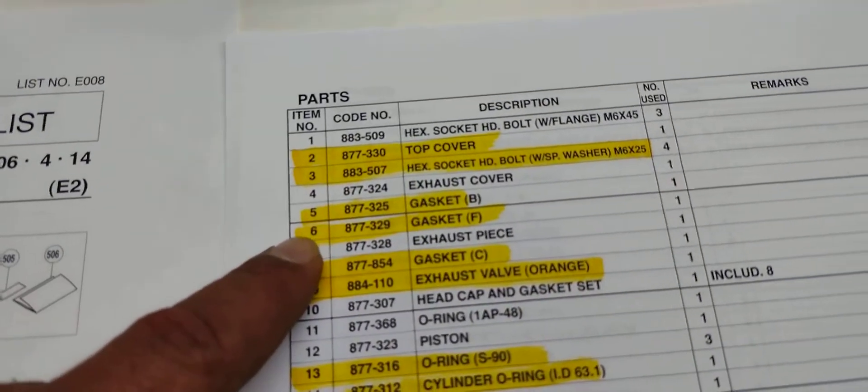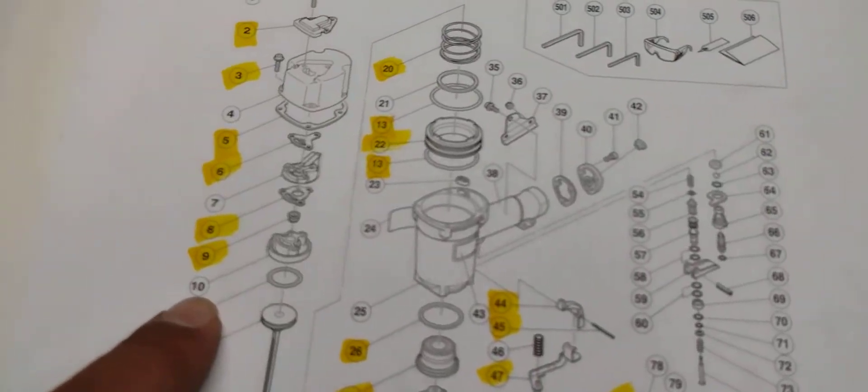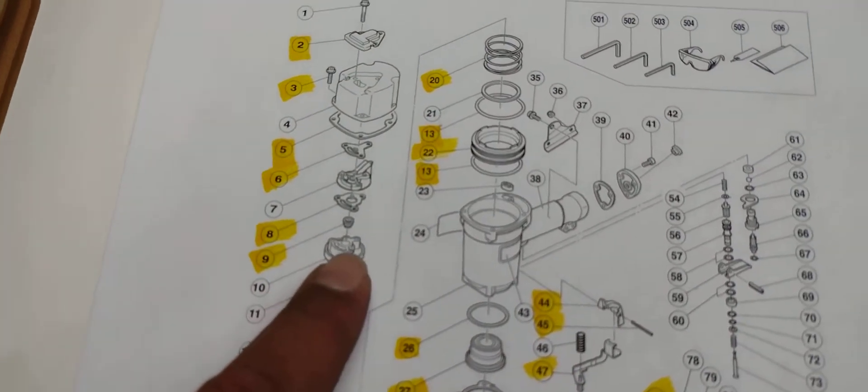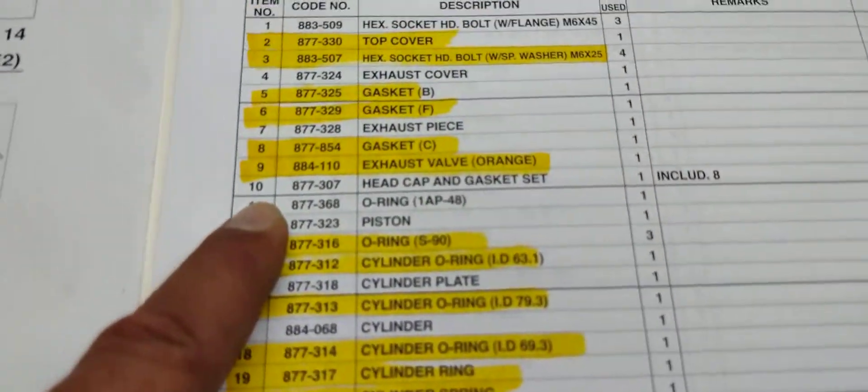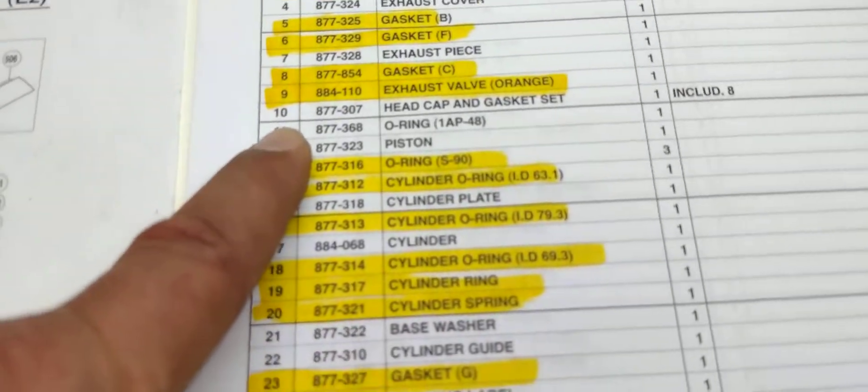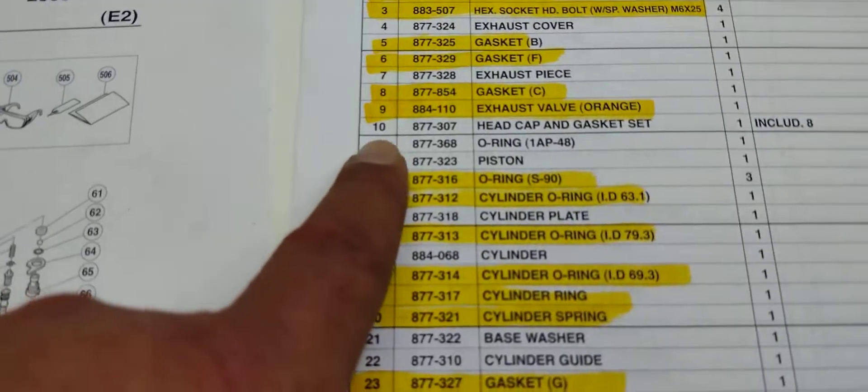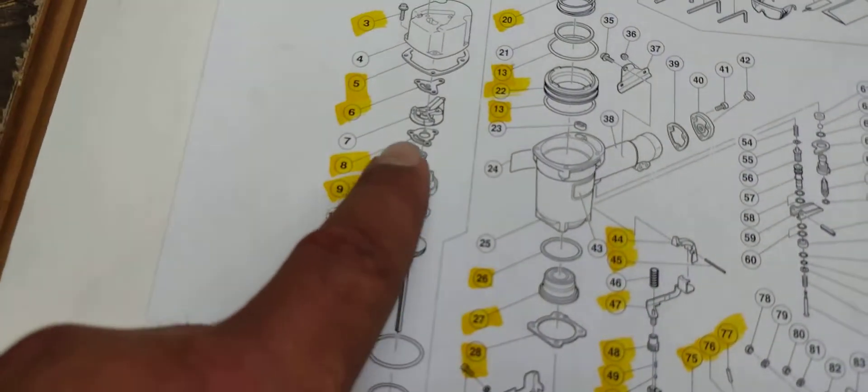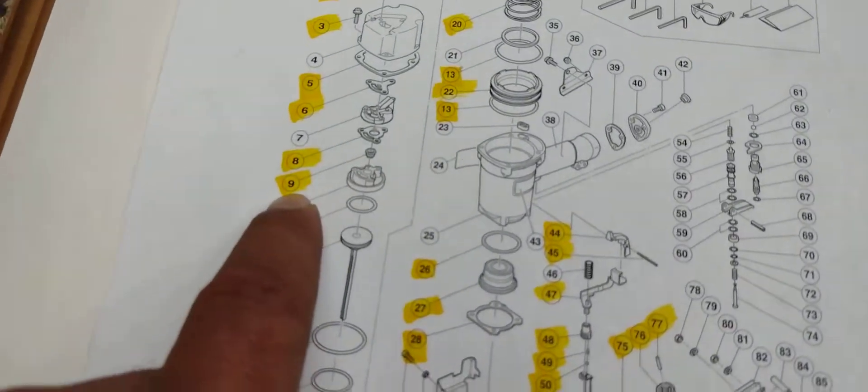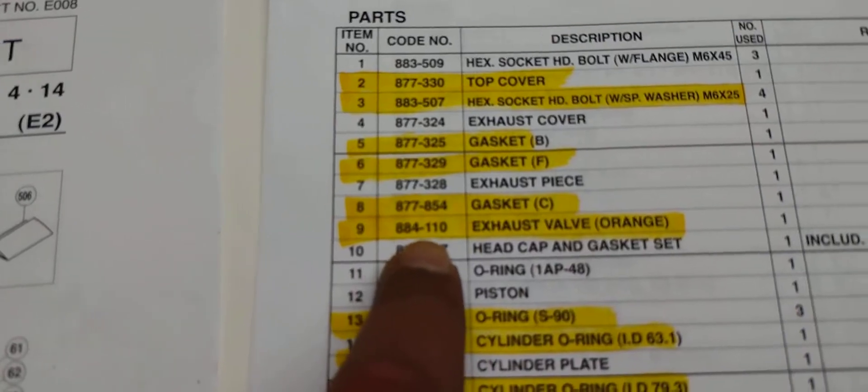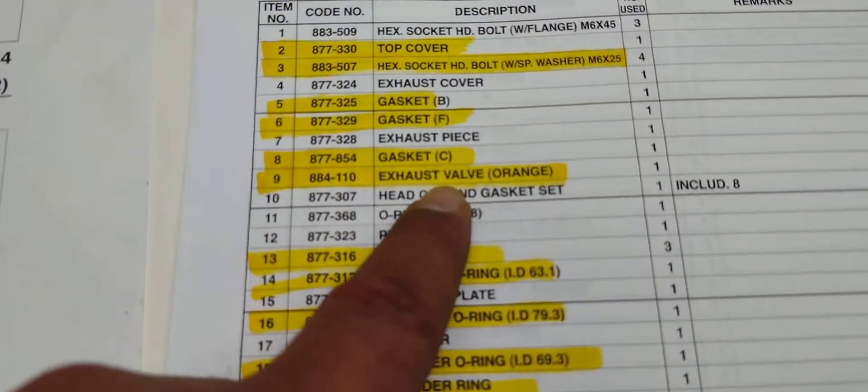Over here you're gonna find number six, that's the gasket. Number eight, that's the second gasket. To make sure you know what the part is called, this is number ten. The number ten is called the head cap and gasket set, it'll come all together if you purchase it from Superior Parts. This part, this part right here, and this part right here are gonna come together, but this you have to purchase separately. This is number nine.